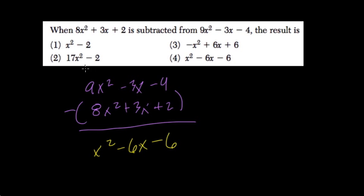So x squared minus 6x minus 6 — that's choice 4. All right, hope this helped.